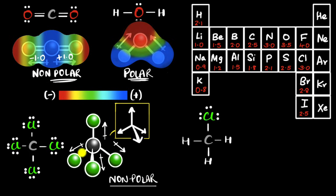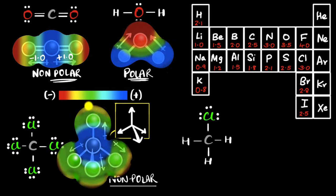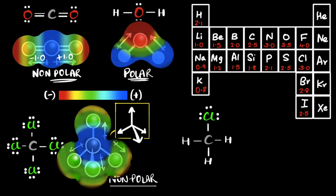The ESP map of CCl₄ shows high electron density around the chlorine atoms, but because of the tetrahedral structure it all balances out. The charges are evenly distributed across the molecule, confirming it is non-polar.